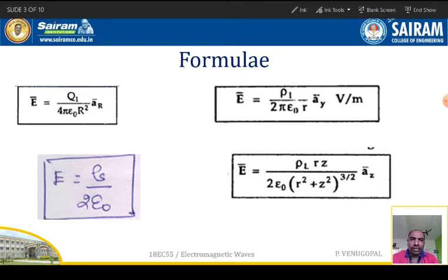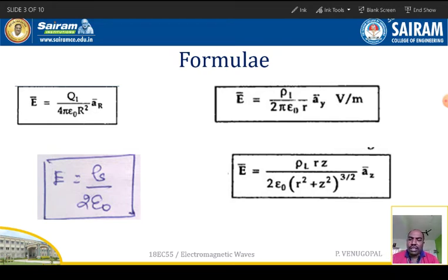For the line charge distribution, we have the charge density called line charge density, which is the ratio of charge divided by the length, or dQ divided by dL. The next formula is electric field intensity due to infinite surface distribution.